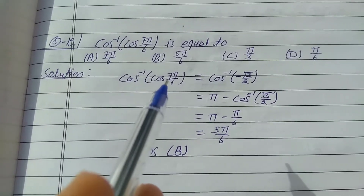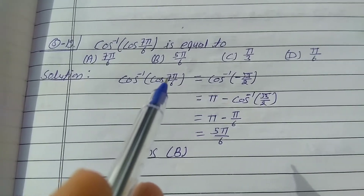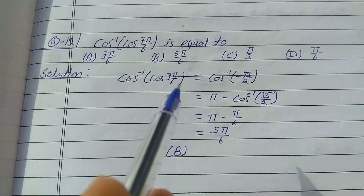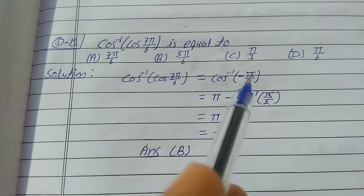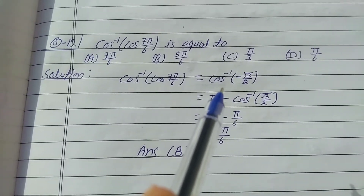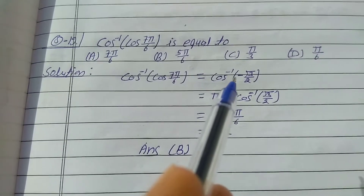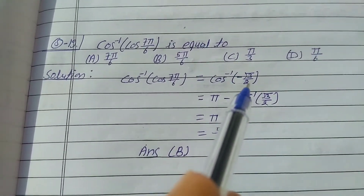The value of cos(7π/6) is −√3/2, so the expression becomes cos inverse of (−√3/2).